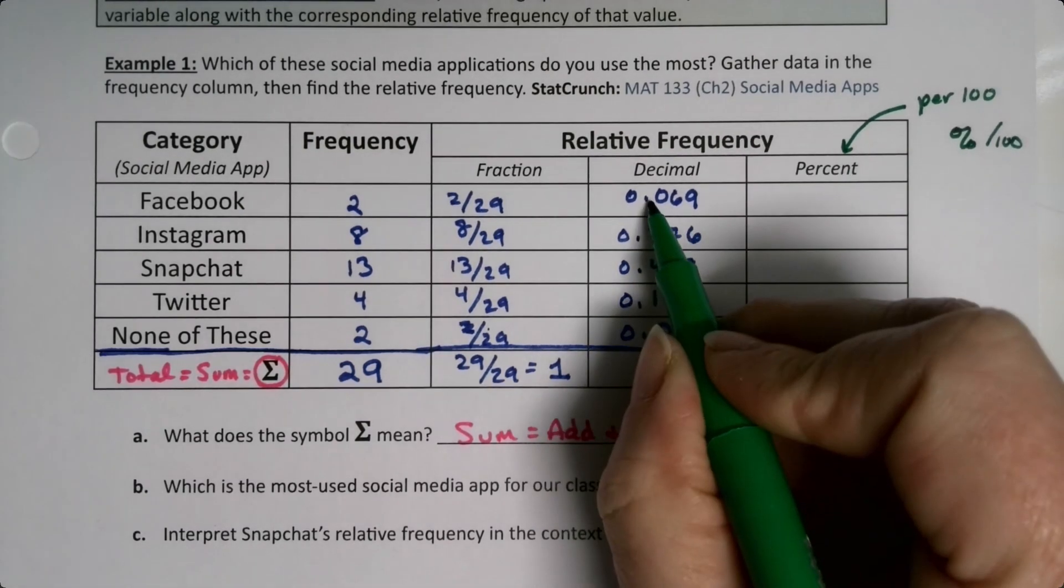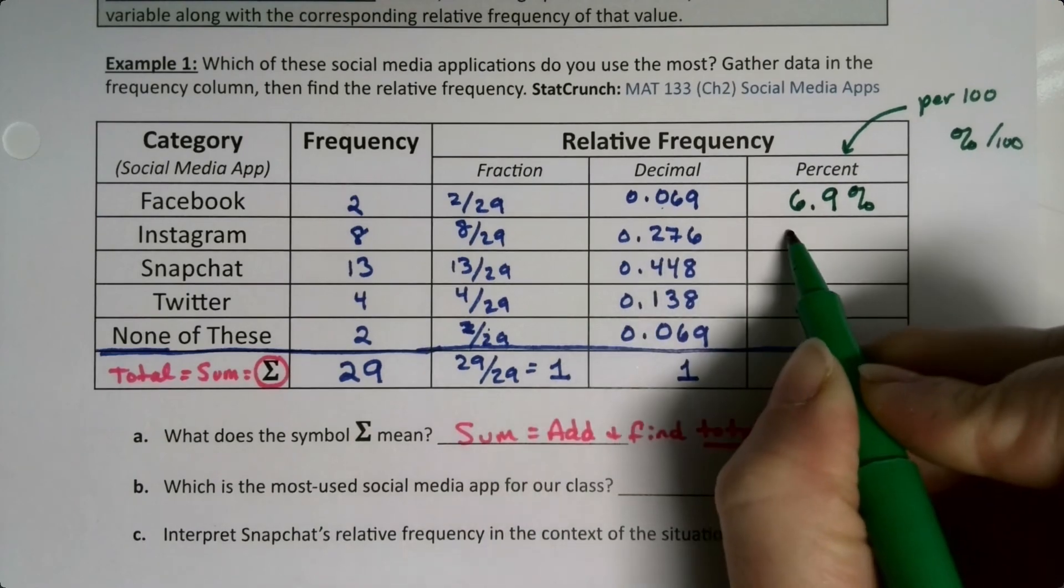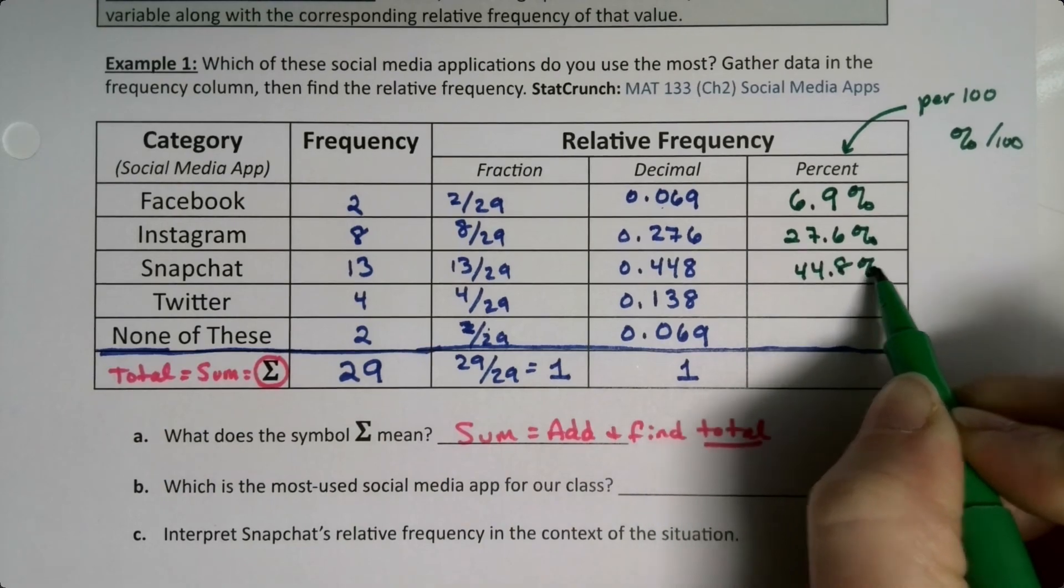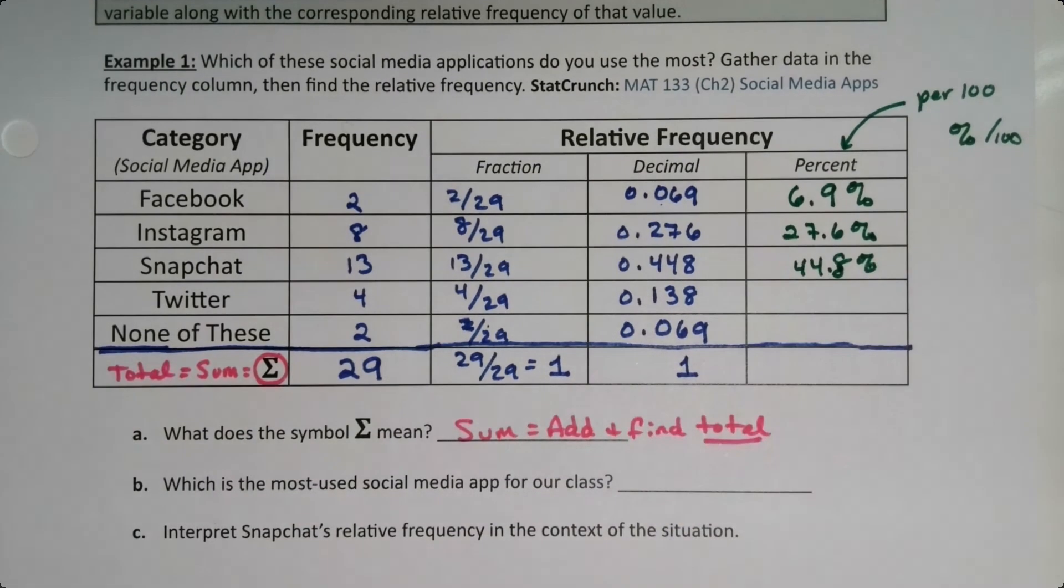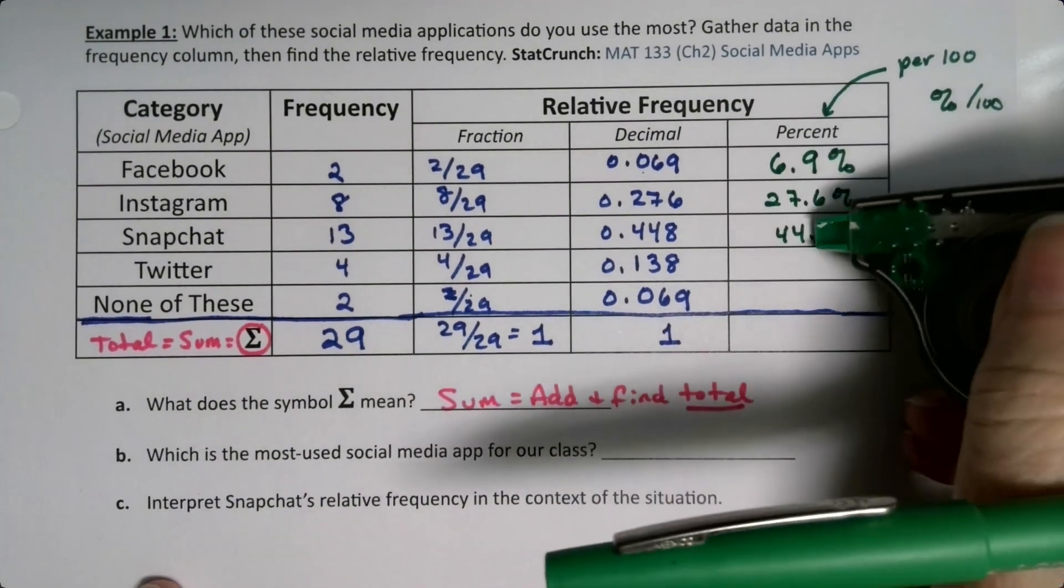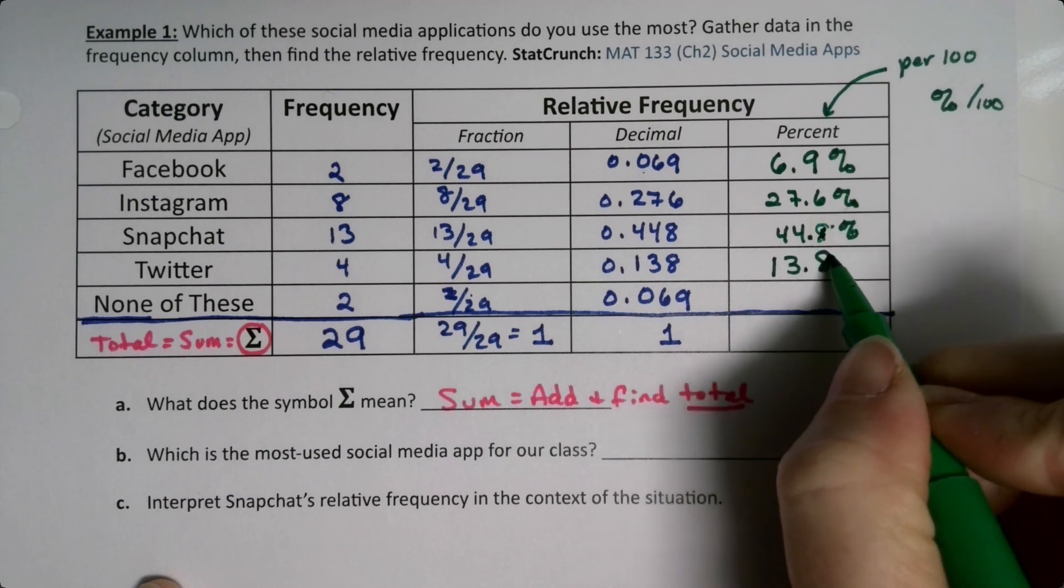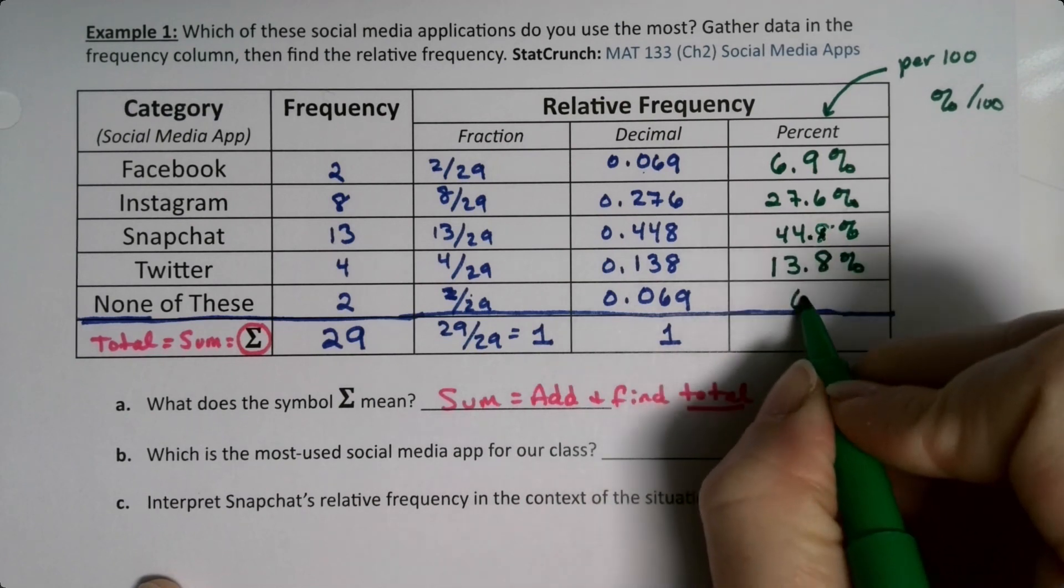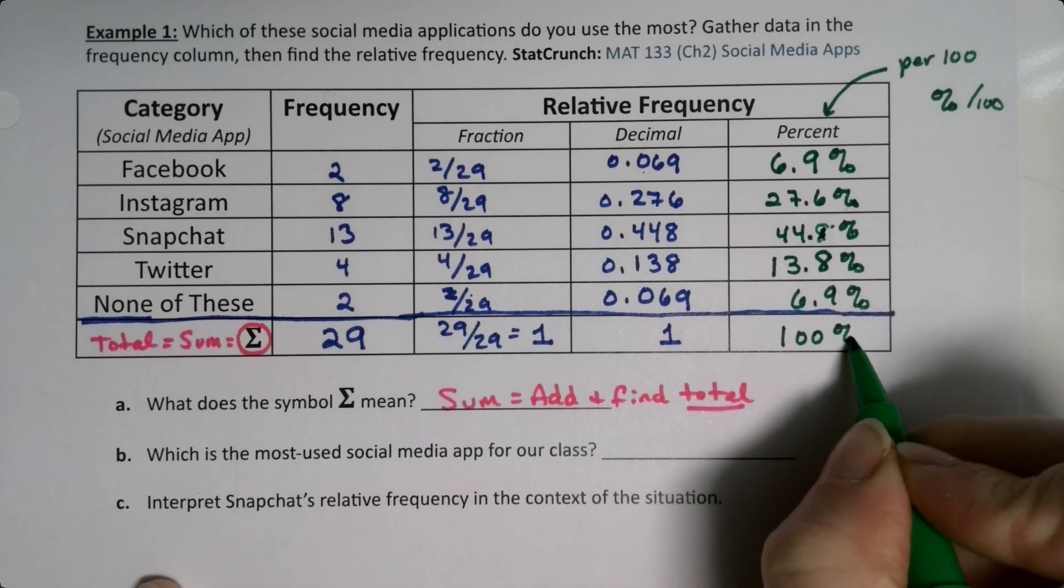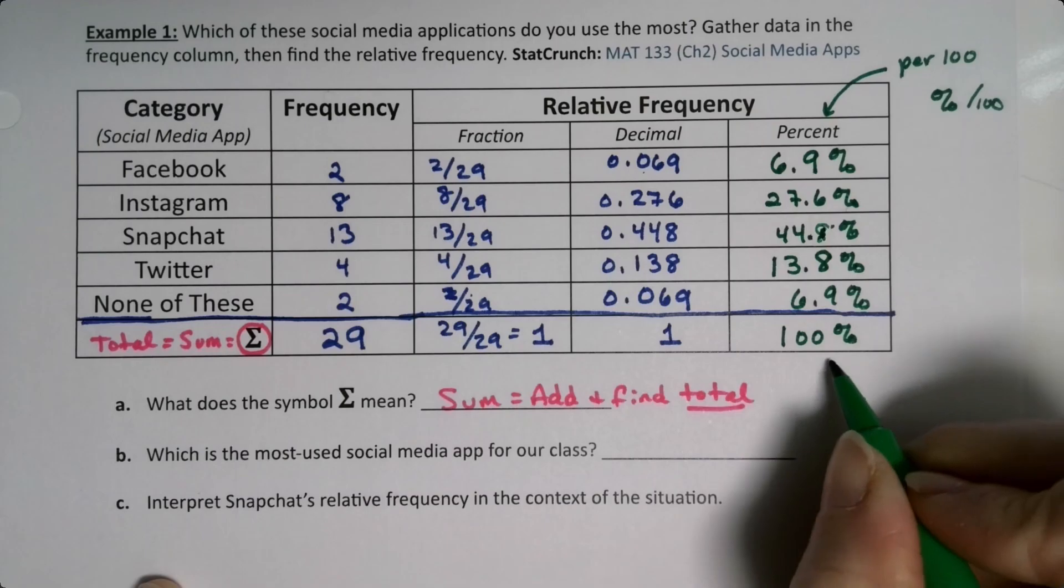Okay, so what's that going to mean? Well, I move it one, two spots over, it becomes 6.9%. One, two spots over is 27.6%. 44.8%. And then 13.8%. And 6.9%. And of course, these would add to 100%, because 100% is one. They're one and the same.